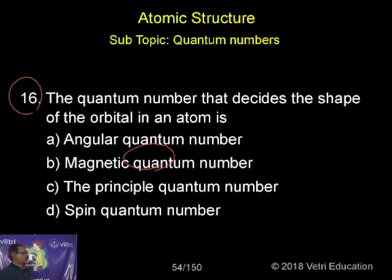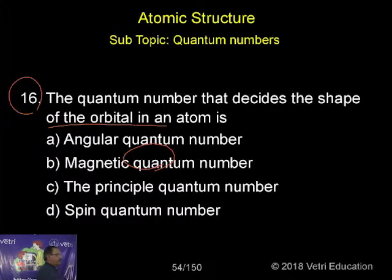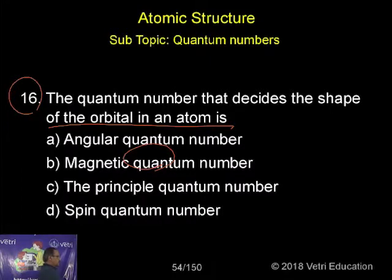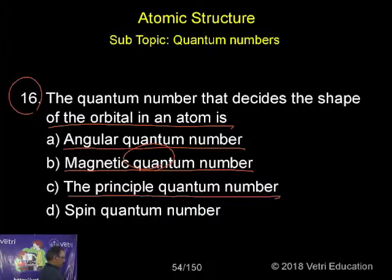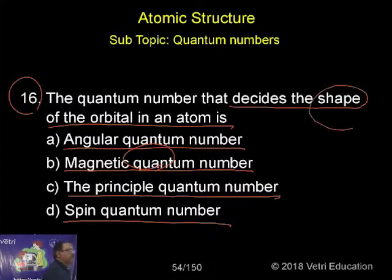Question number 16: the quantum number that decides the shape of the orbital of an atom. There are four options given: angular quantum number, magnetic quantum number, principal quantum number, and spin quantum number. Each quantum number gives some information. They are asking about which one decides shape.